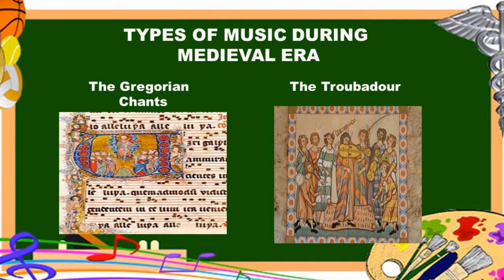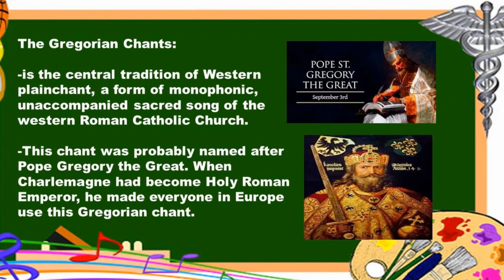There are two types of music during the medieval era: the Gregorian chant and the troubadour. The Gregorian chant is a central tradition of Western plainchant — a form of monophonic, unaccompanied sacred song of the Western Roman Catholic Church. This chant was probably named after Pope Gregory the Great. When Charlemagne became Holy Roman Emperor, he made everyone in Europe use this Gregorian chant.